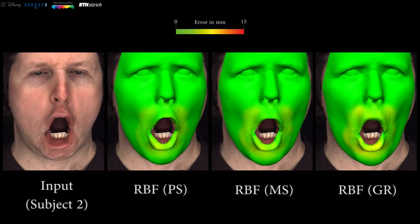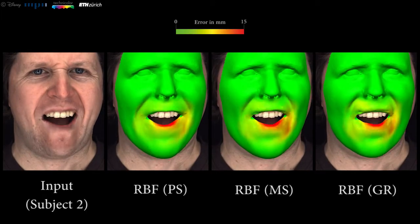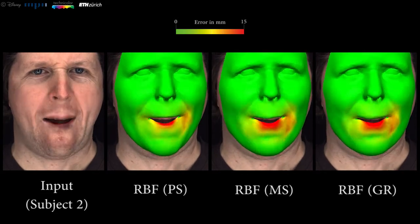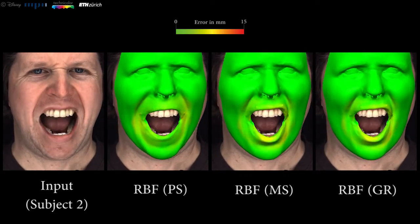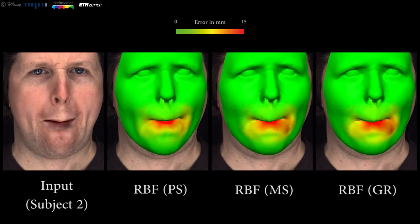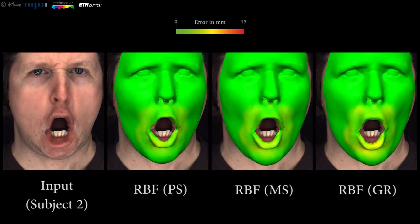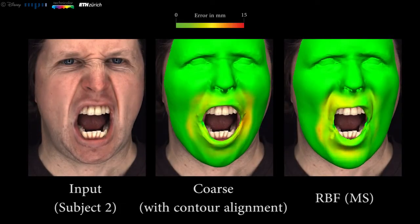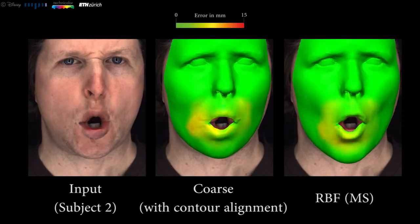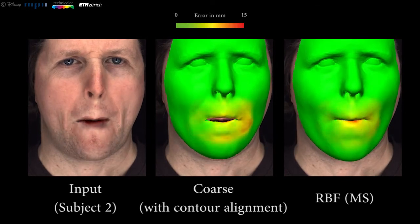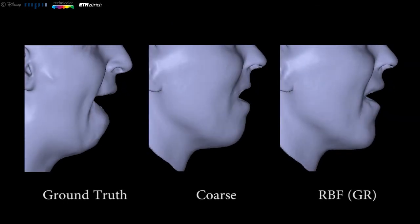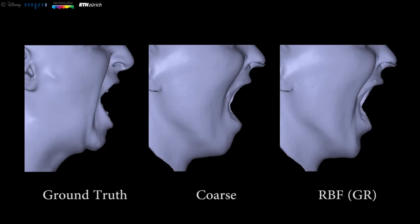In the following, we evaluate our approach. Here, we compare the different types of regressors we used earlier. Our multiple subject and generalized regressor perform better than the personalized version, and both perform similar to each other. This shows that our approach generalizes well to novel subjects. We also compare our approach to a model-based tracker that uses explicit contour alignment constraints. The results obtained by our approach are of higher quality.